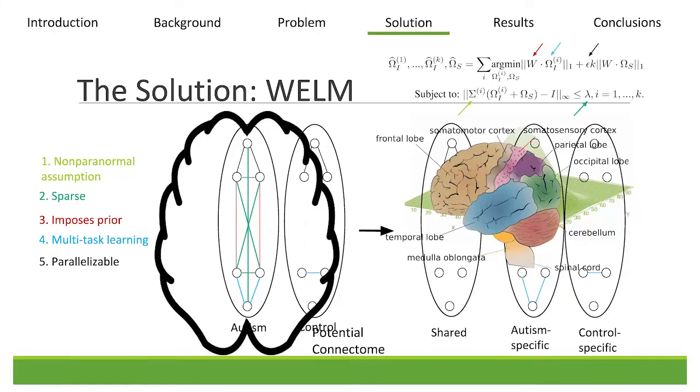For instance, we know the brain doesn't like to have long-range connections because it costs a lot of energy and it wastes a lot of space to have things connected without actually doing any computation. Because of this, we want to favor shorter edges over longer edges.